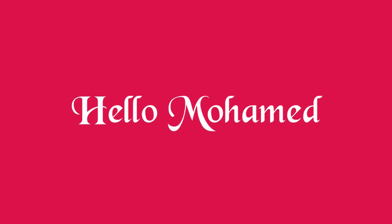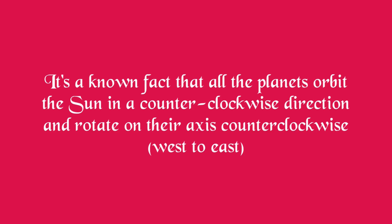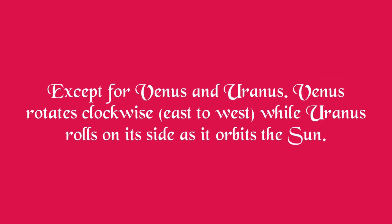Hello Mohamed. My name is Alia. It's a known fact that all the planets orbit the Sun in a counterclockwise direction and rotate on their axis counterclockwise west to east, except for Venus and Uranus. Venus rotates clockwise east to west, while Uranus rolls on its side.